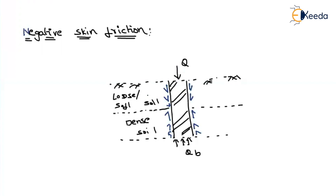So the loose soil portion, over the length l1, contributes negative skin friction. That means instead of resisting the load, the soil is dragging the pile in the downward direction. As a result, the capacity of the pile is reduced in the portion of length l1.